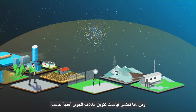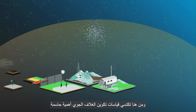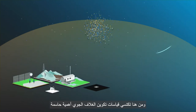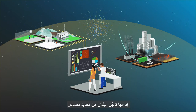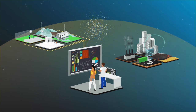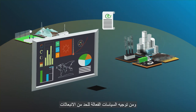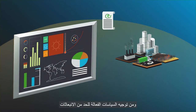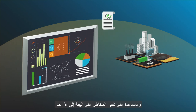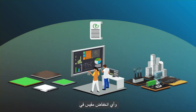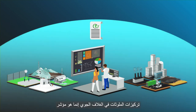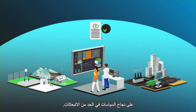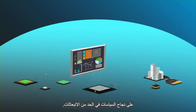Thus, measurements of atmospheric composition have become crucial as they enable countries to identify sources of pollutants and greenhouse gases and to guide effective policies to reduce emissions and help minimise risks to the environment. A measured drop in atmospheric pollutant concentrations is an indicator of a successful policy to reduce emissions.